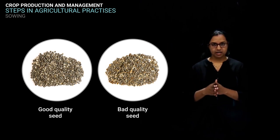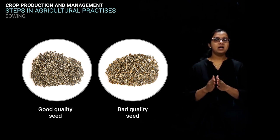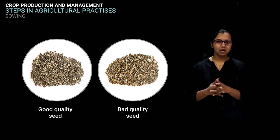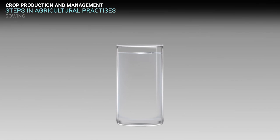The next step in agricultural practice is sowing. Before sowing seeds, it is very important to select good quality seeds. Farmers usually prefer seeds which give high yields. Good quality seeds are healthy and of a superior variety. To separate good seeds from bad ones: fill half a beaker with water, put in a handful of wheat seeds and stir. Some seeds will float because they are lighter — these are damaged, hollow seeds. The heavier, healthier seeds will sink to the bottom. This is a very good method for separating good healthy seeds from damaged ones.